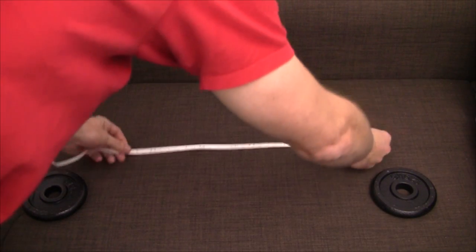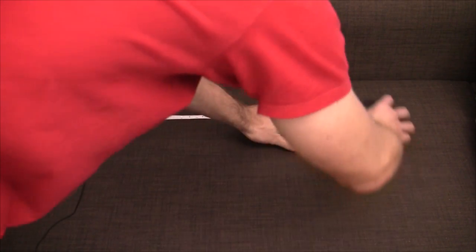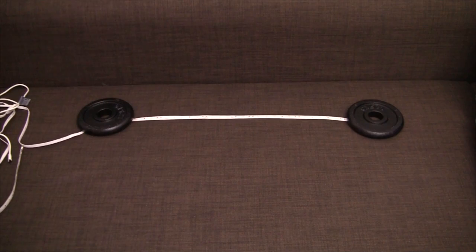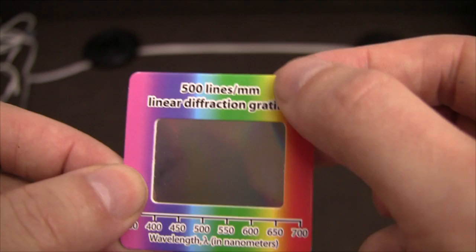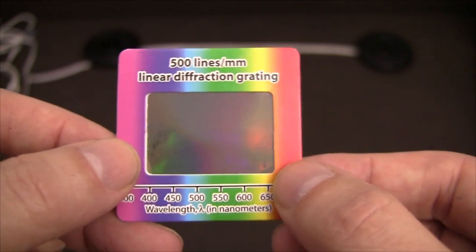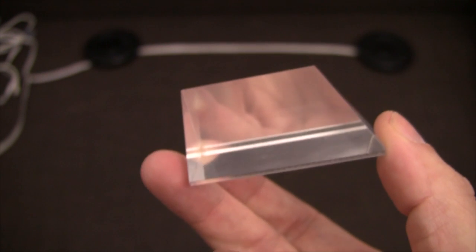I'm gonna do is just move the LEDs down onto a dark background like that. So what I've got here is a diffraction grating, 500 lines per millimeter, and what this does is essentially the same thing that a prism